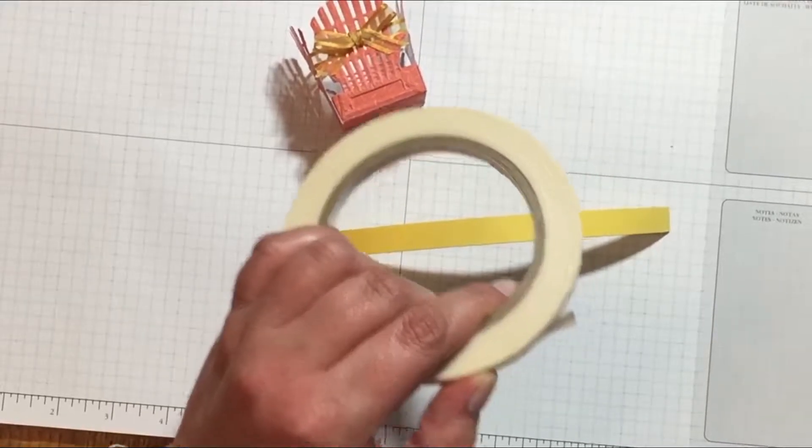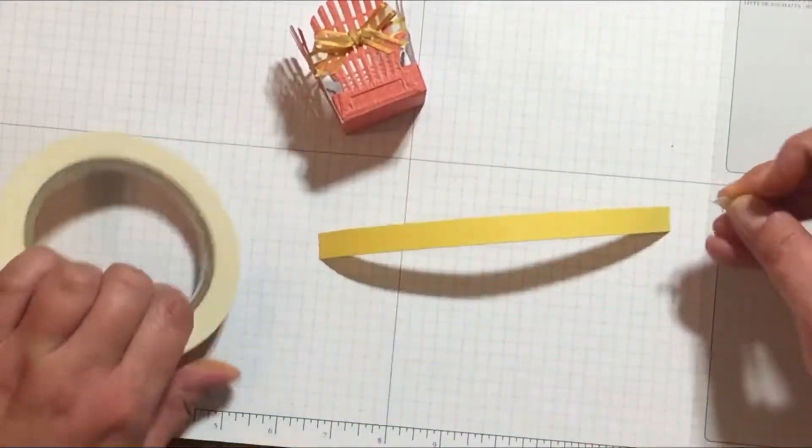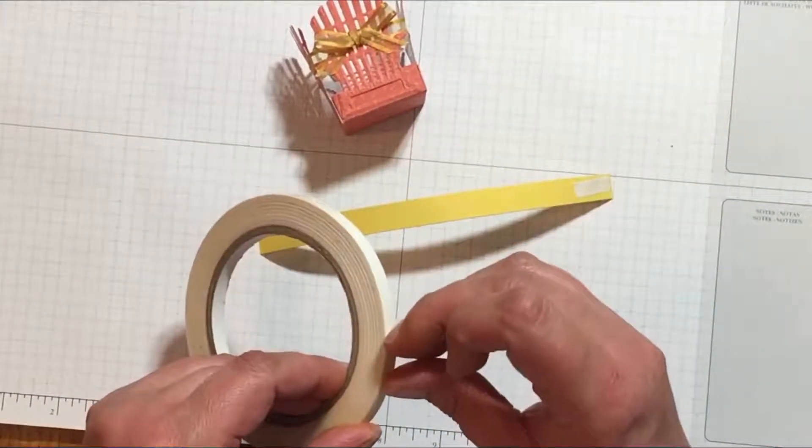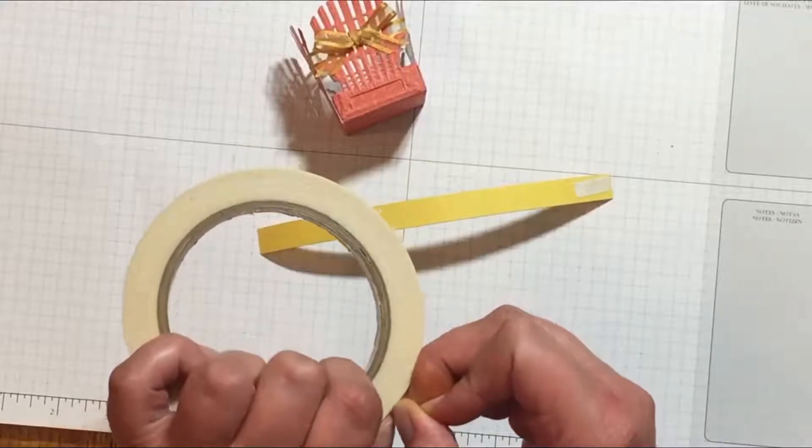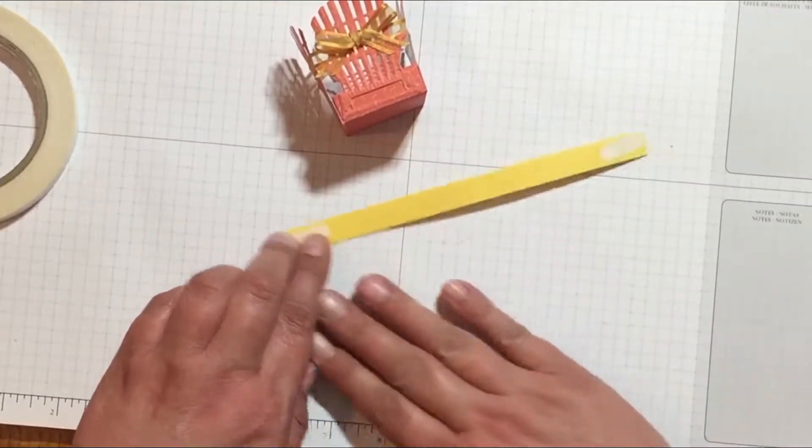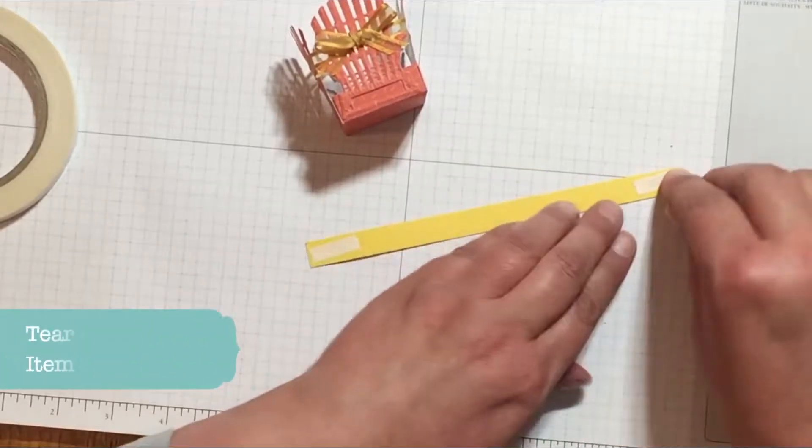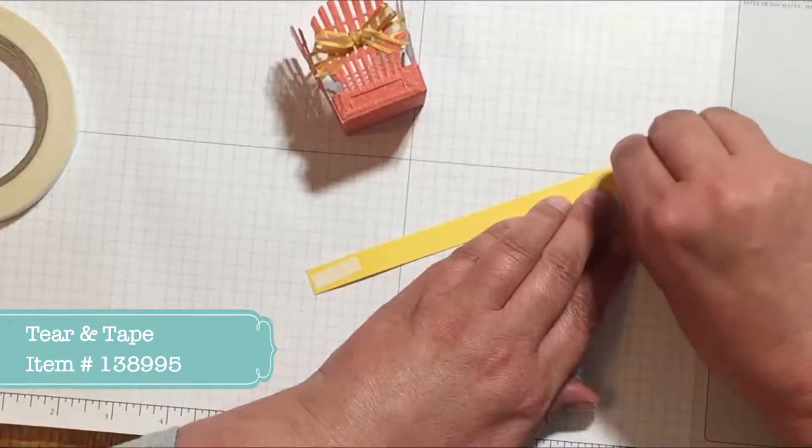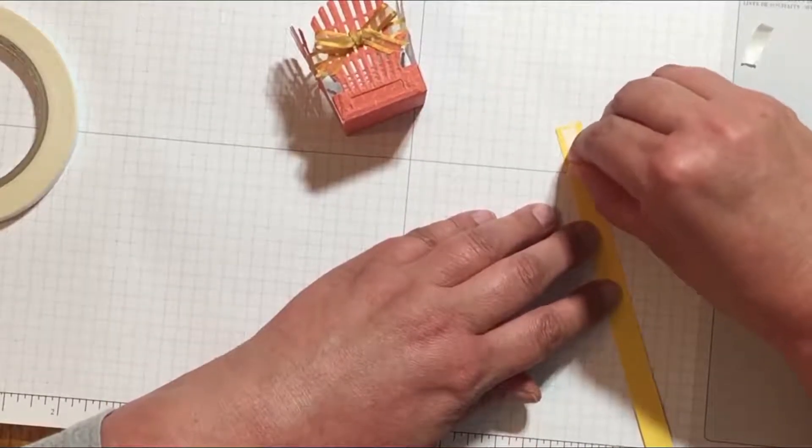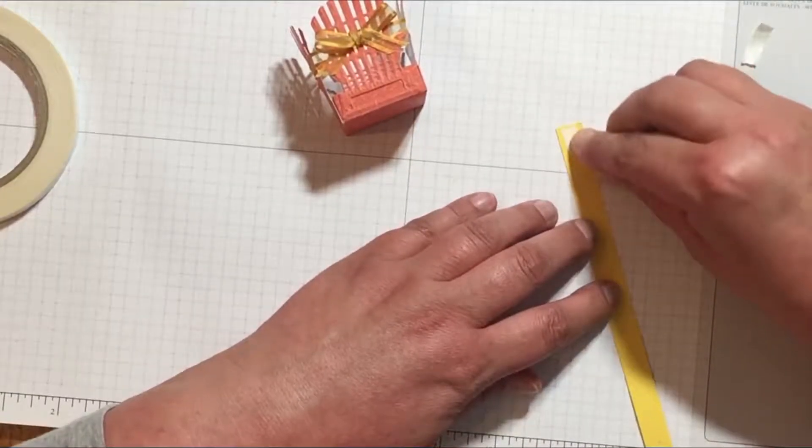To attach the handle to the basket, you want to use a stronger adhesive than just snail tape runner or liquid glue. This way if somebody decides to pick up the basket by the handle, the handle doesn't instantly pull away. Here I'm using some Terran tape, which is the double sided sticky tape that Stampin' Up offers, but you could also use fast fuse or something else equally strong.